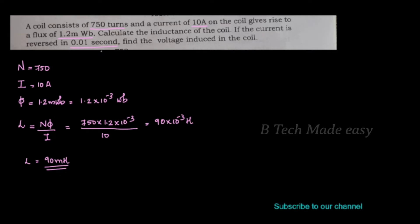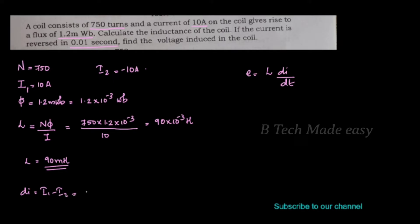When the current is reversed, E = L × (dI/dt). The change in current is I₁ − I₂ = 10 − (−10) = 20 amperes. So, E = 90 × 10⁻³ × (20 / 0.01).